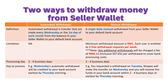The second one will be manual withdrawal. Manual withdrawal will depend on your needs and it will be a single daily manual withdrawal from your wallet to your bank account. The minimum withdrawal is RM1 in Malaysia. Every week there will be three free withdrawal requests for each user. If there are more than three withdrawal requests, there will be a charge of 12 cents for processing fees. It will take about two to four business days to transfer from your seller wallet to your bank account.